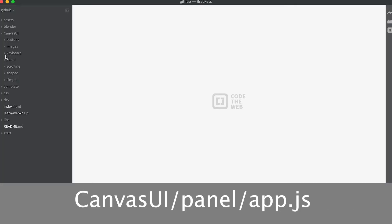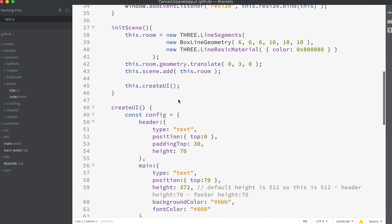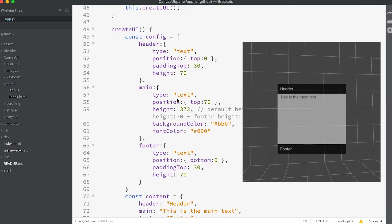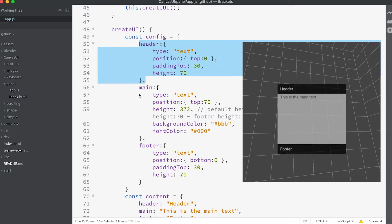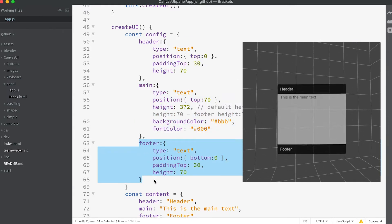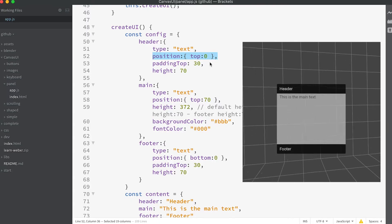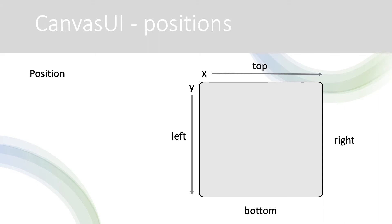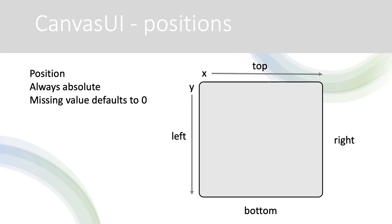Open app.js in the folder canvas UI panel and slide down to find the create UI method. Notice here in the config object we specify three sub-objects, all of type text. Header has position top. Positions in Canvas UI can be specified as top, left, bottom, right, x and y. They work like CSS, except position is always absolute and not inherited. If you miss out a value it defaults to zero. So position top zero will position the header at x equals zero, y equals zero. Notice that the coordinate space starts at the top left.